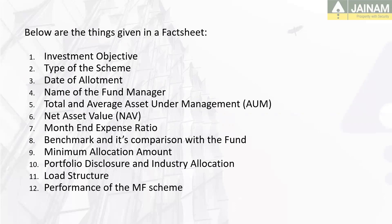Portfolio disclosure and industry allocation — Mutual fund holds information on the industry and sector the fund is investing in. It contains the top holdings of the scheme and their percentage weight. Load structure — It contains entry and exit load fee structure. Select the scheme which contains minimum entry and exit load fees.